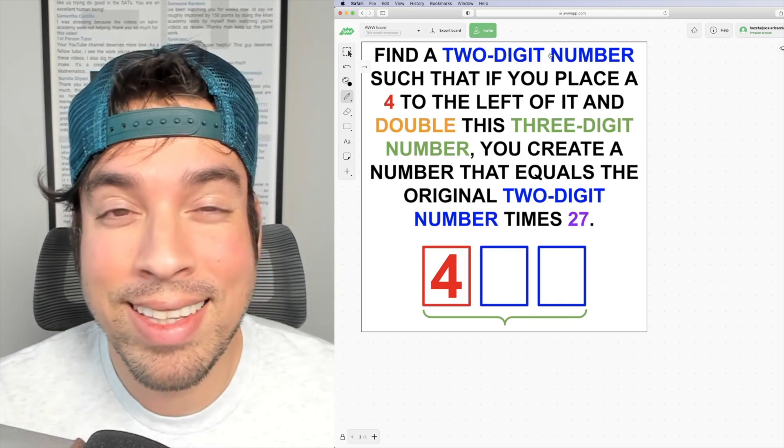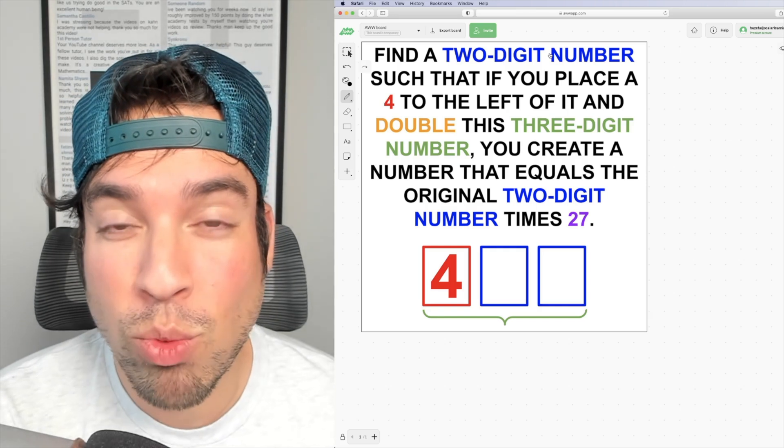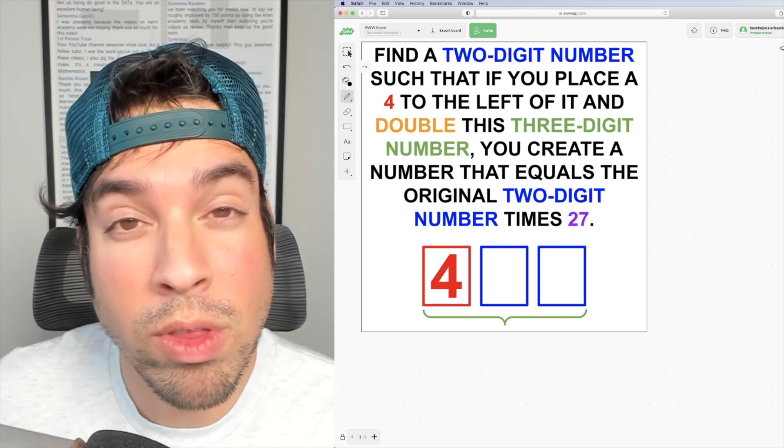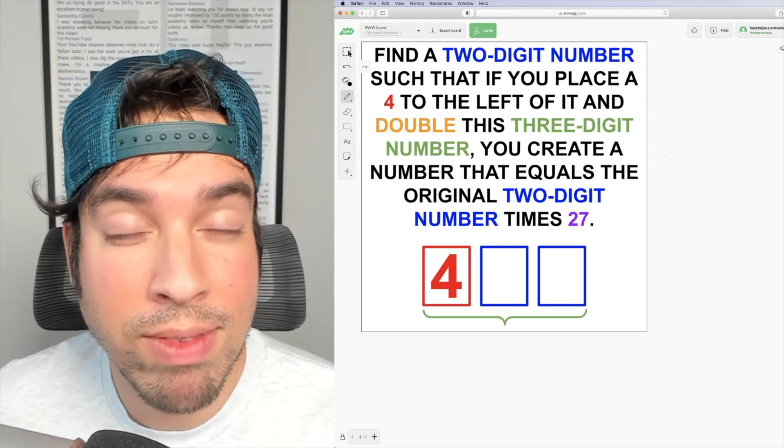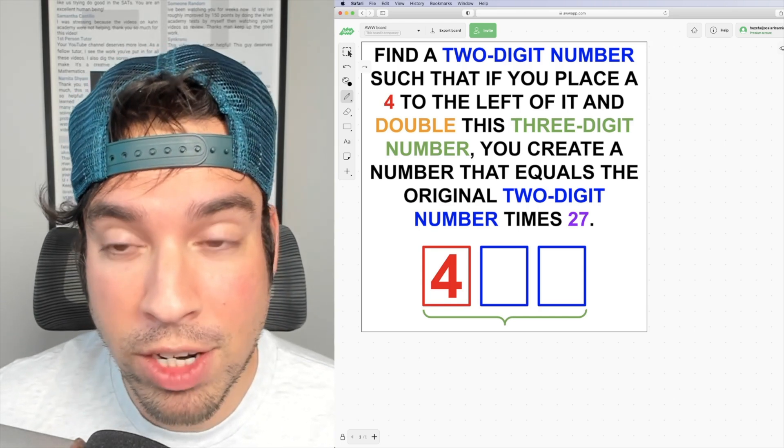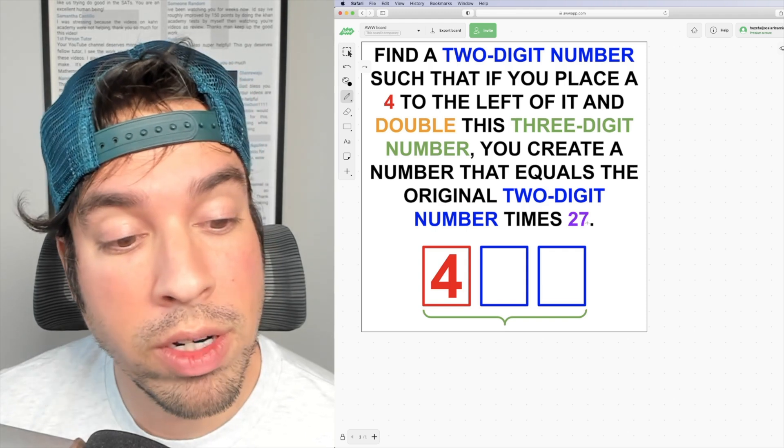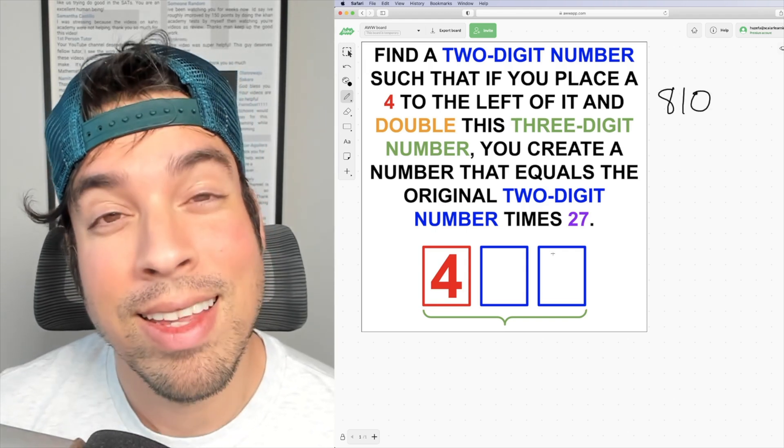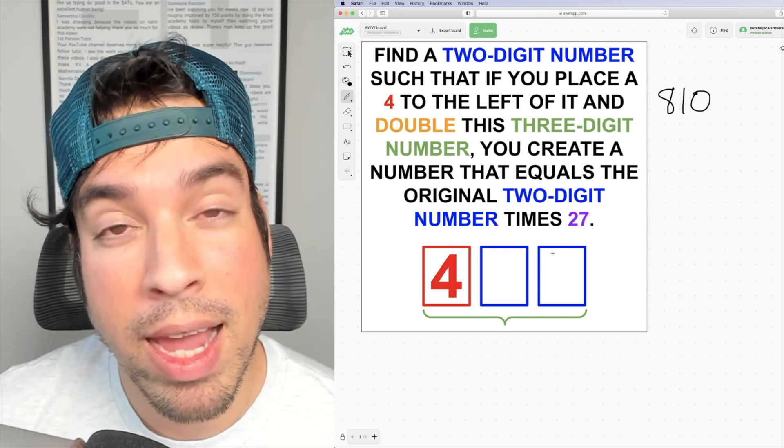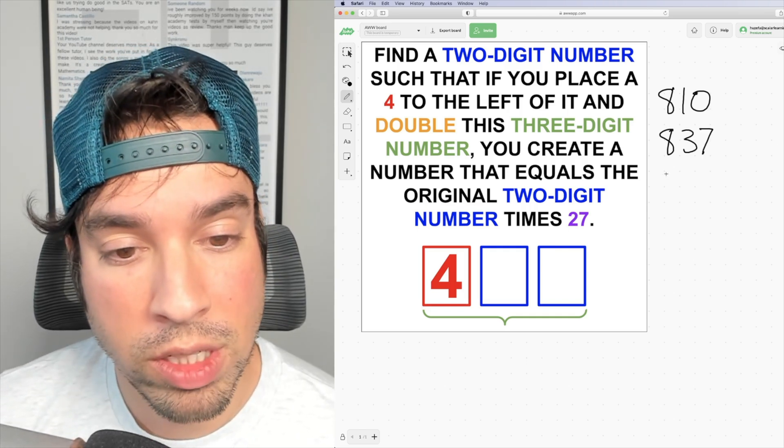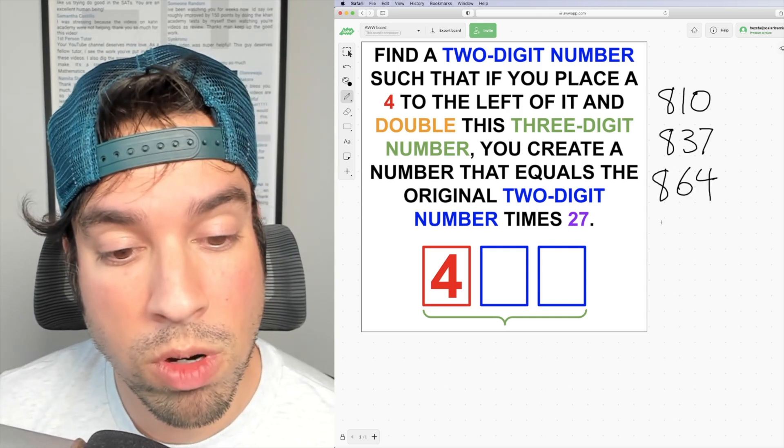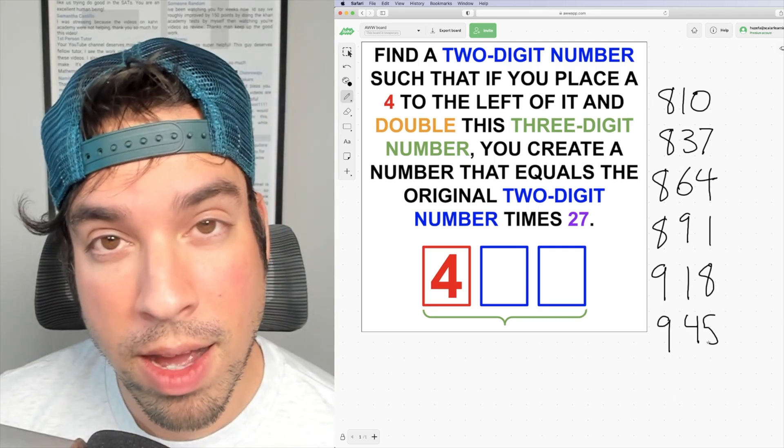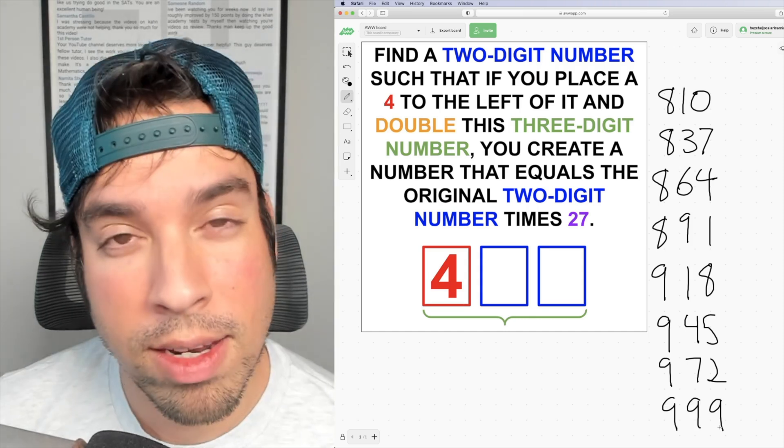I also know that if I take this two digit number and I multiply it by 27, it's got to be in that same zone. So now what I'm going to do is I'm going to start thinking about multiples of 27 that fall within this 800 to 998 range. So starting with 30 times 27, we get 810. And then I'm going to list out the remaining ones by adding 27: 837, 864, 891, 918, 945, 972, and 999.